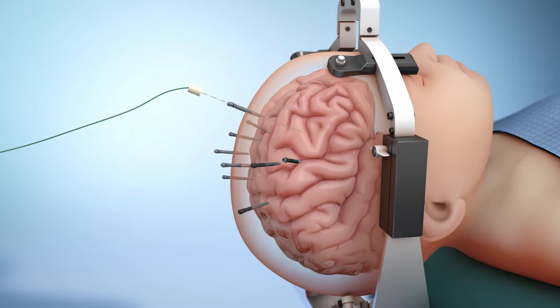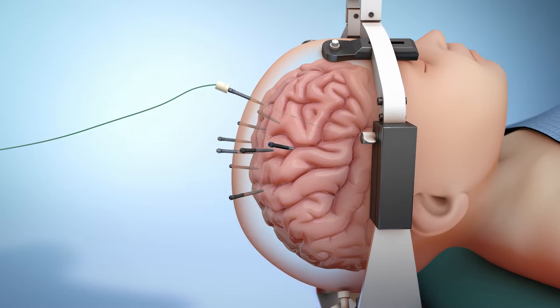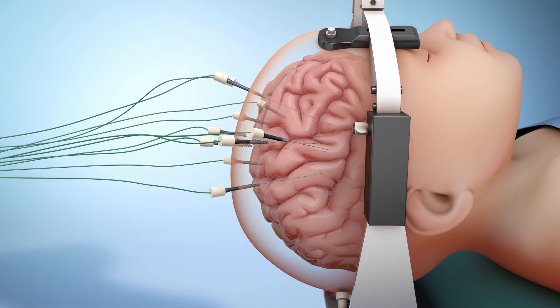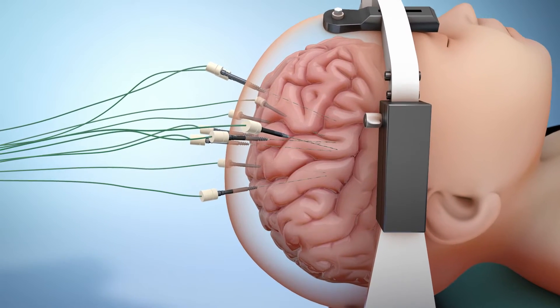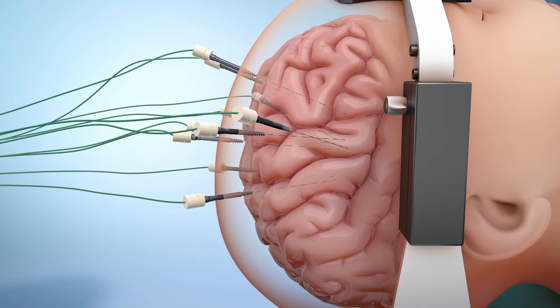Next, the surgeon will carefully pass an electrode through each hole into a precise spot in the brain. Each electrode will be tested for quality of recording brain waves.